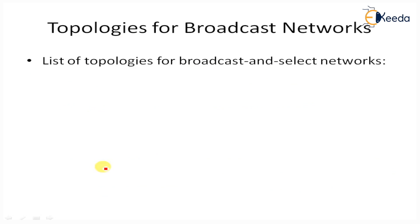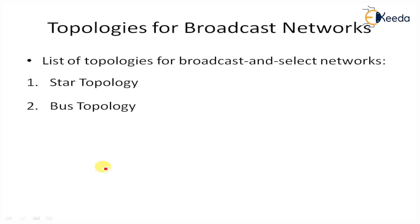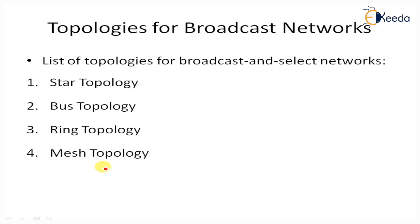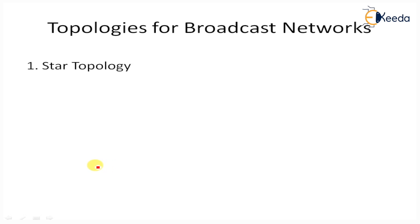There are four different types of topology for broadcast and select networks: first, star topology; second, bus topology; third, ring topology; and fourth, mesh topology. Let us discuss each one in more detail.